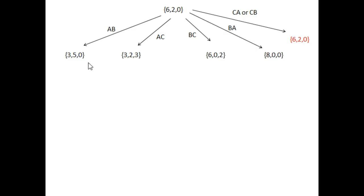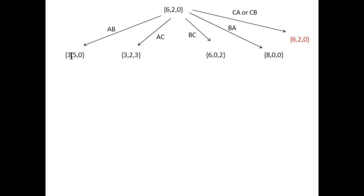Jug B has the capacity of 5 liters but has 2 liters in our previous state. If we add 3 liters of water from jug A to B, the value will be 3. The capacity of this jug is 5, so we cannot add more water to this jug. The new state will be 3,5,0. The capacity of jug C is 3.